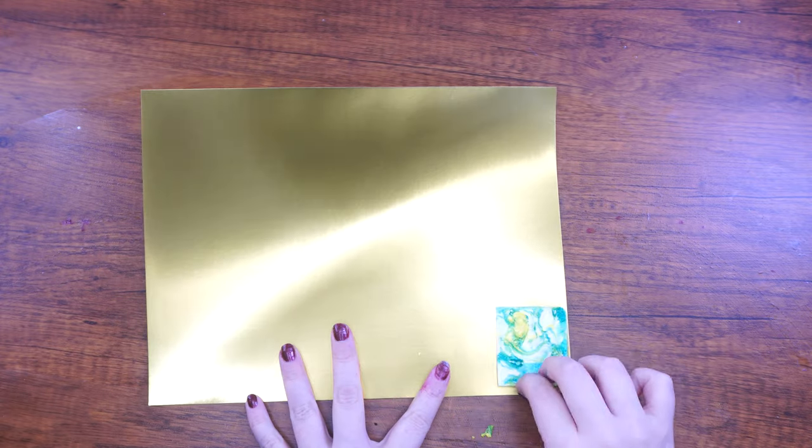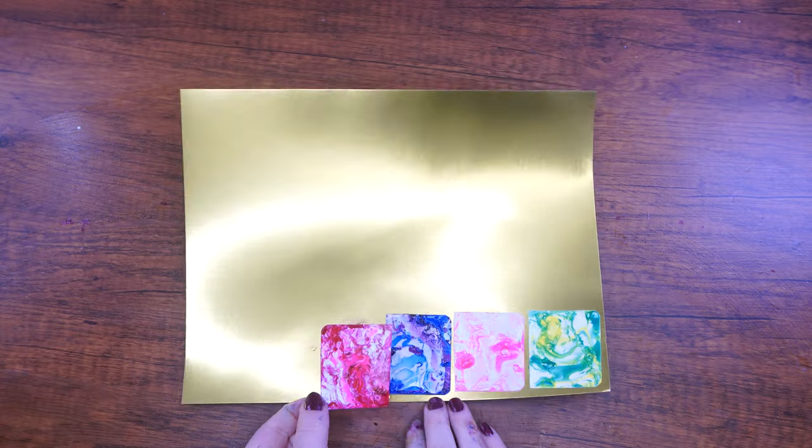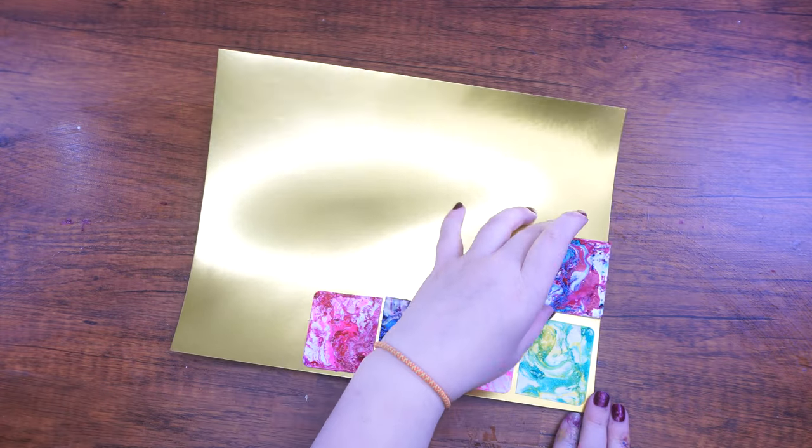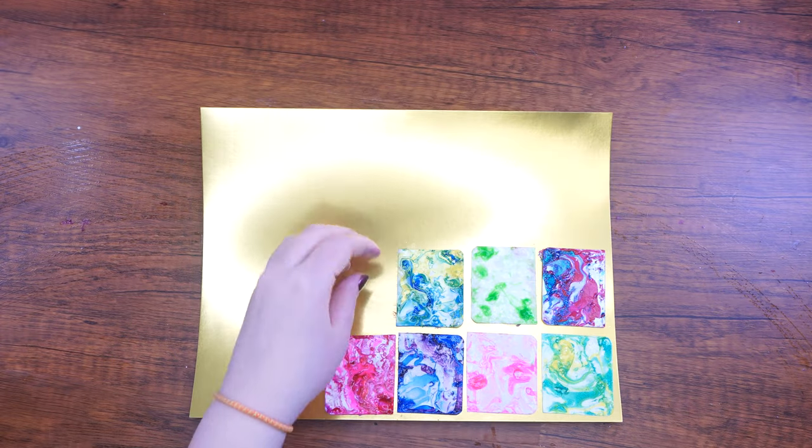Once the cards are mostly dry, use the glue stick to stick them onto the gold sheet of cardstock in a pattern of three rows of four stones each. When you are done, cut off any excess paper that goes beyond the space where the paper stones are glued.